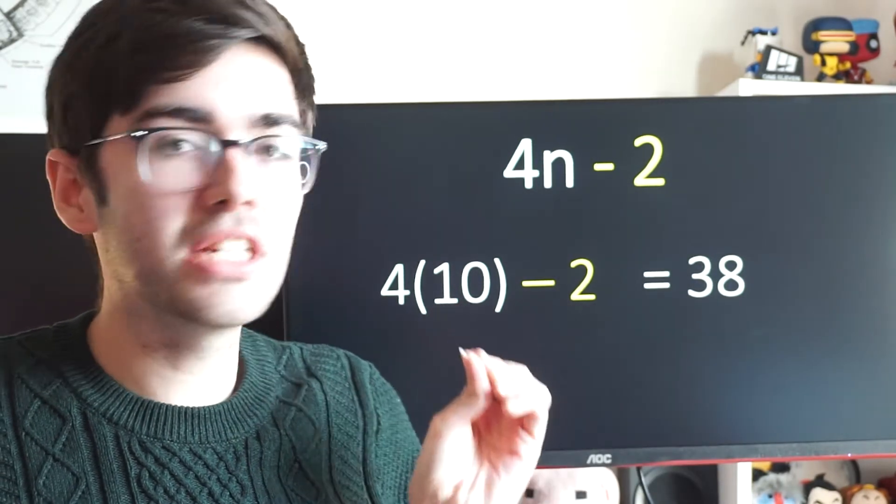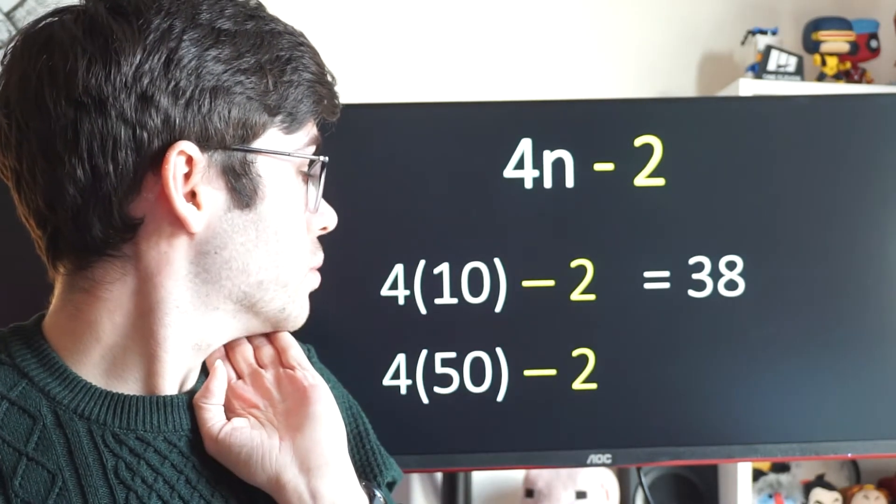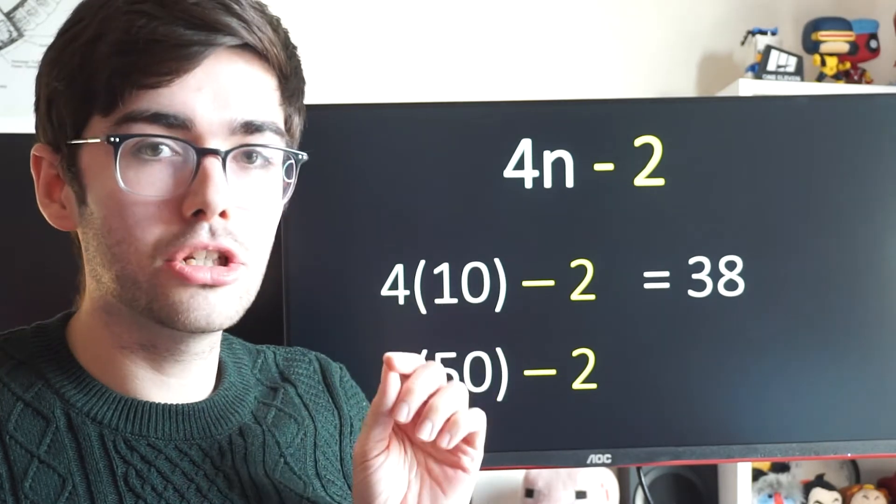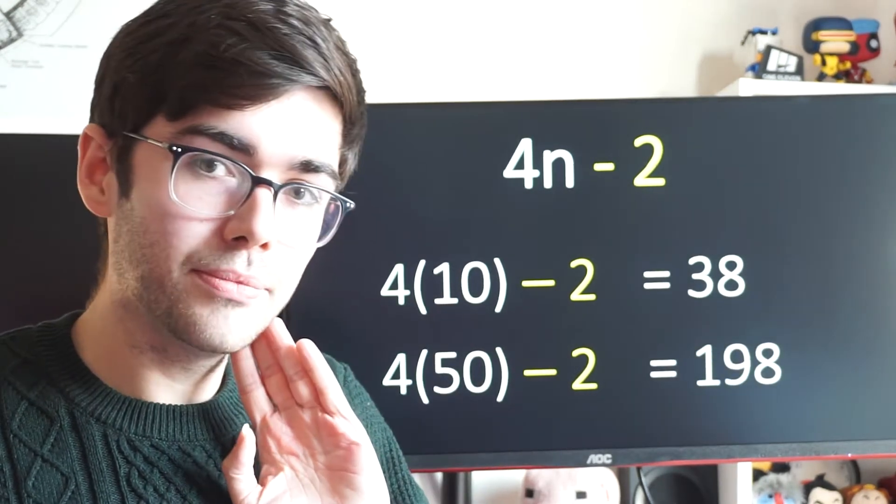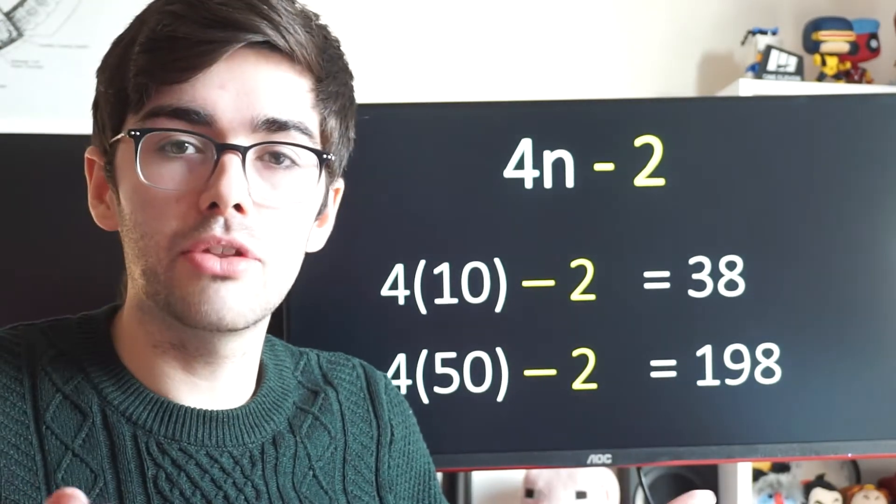What about the 50th term of this sequence? I put 50 in the brackets instead, in place of n. 4 times 50 minus 2, that would be 200. Take away 2 would give me 198. And that's how we can find specific terms in a sequence if we know the nth term.